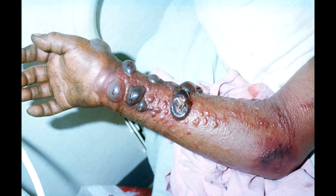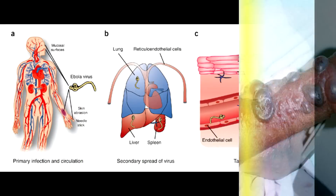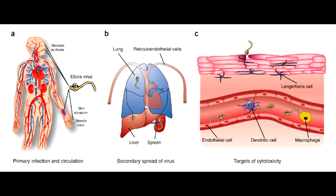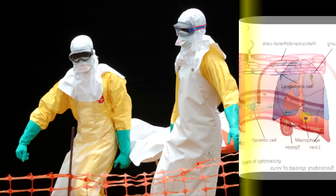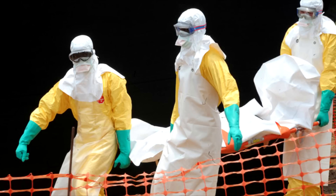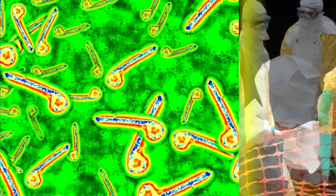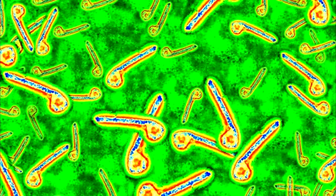It first appeared in 1976 in two simultaneous outbreaks, in Nzara, Sudan, and in Yambuku, in the Democratic Republic of Congo. The latter was in a village situated near the Ebola River, from which the disease takes its name.